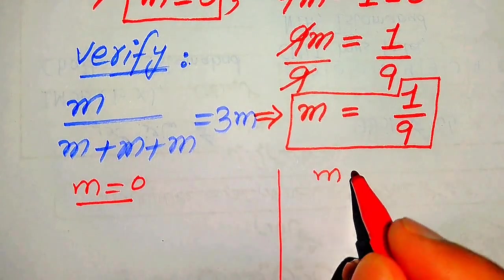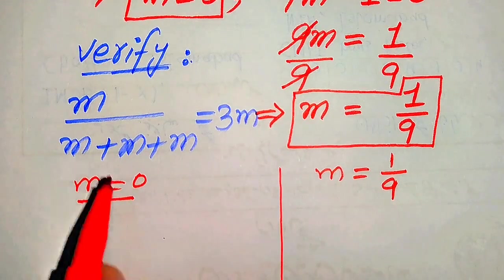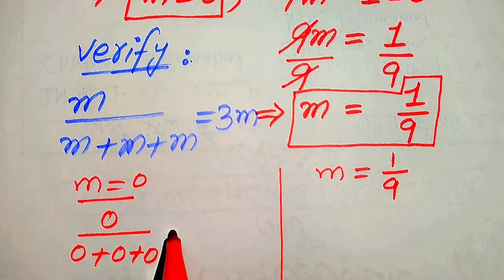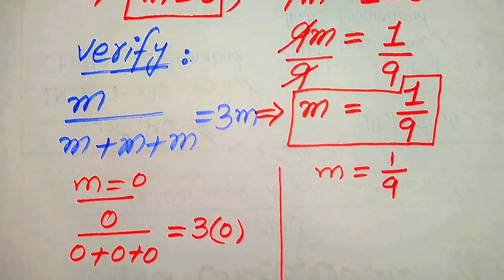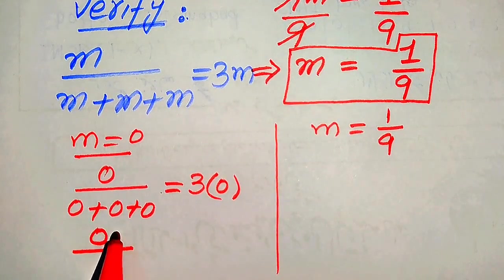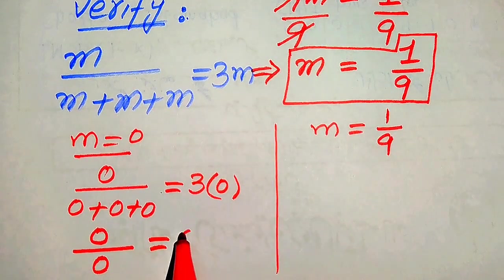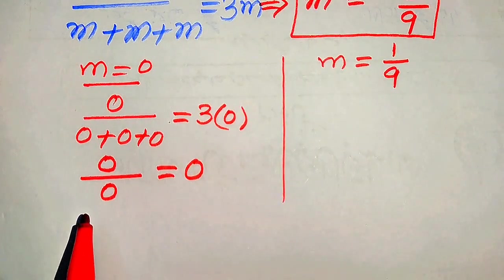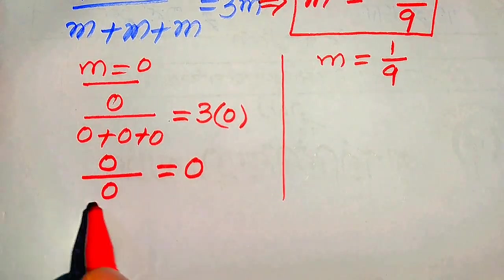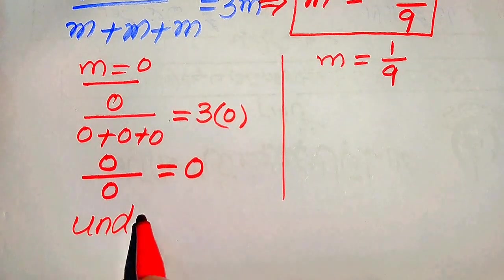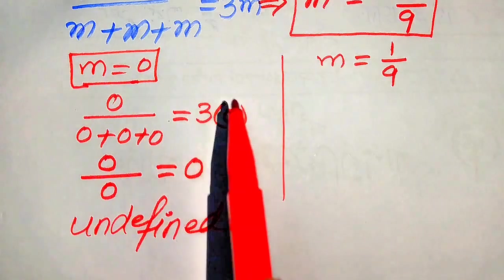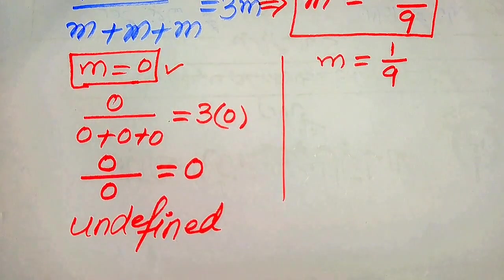When we put m equals zero, we get zero divided by (zero plus zero plus zero) equals three times zero. The denominator becomes zero, and we know that zero over zero is the indeterminate form — in other words, it is undefined. So when m equals zero, the given equation is undefined, which means this root does not satisfy the given equation, and we reject this case.